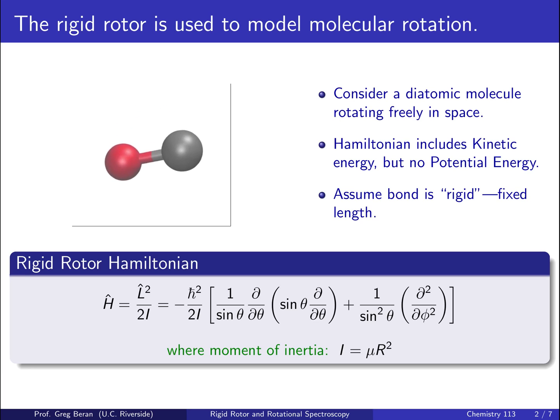Our Hamiltonian here looks like the angular momentum squared over two times the moment of inertia. This is a lot like the particle in the box where you could think of the Hamiltonian there as being the linear momentum squared over two times the mass of your particle. Here, for a rotating body, the moment of inertia takes the place of the mass, and we have angular momentum instead of linear momentum.